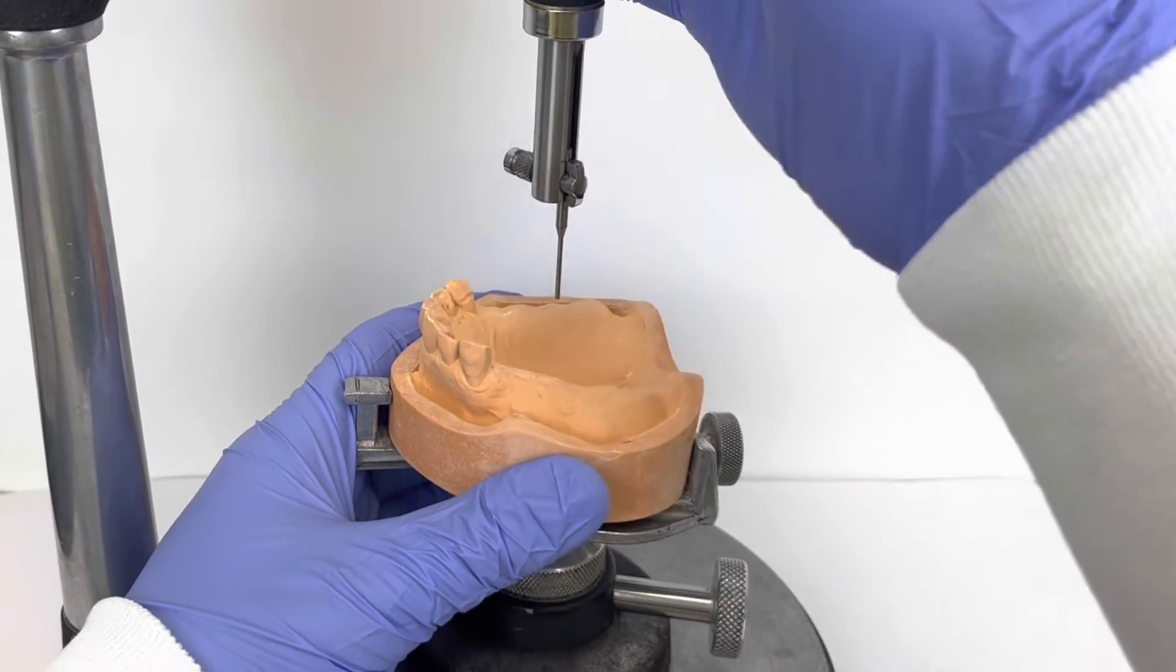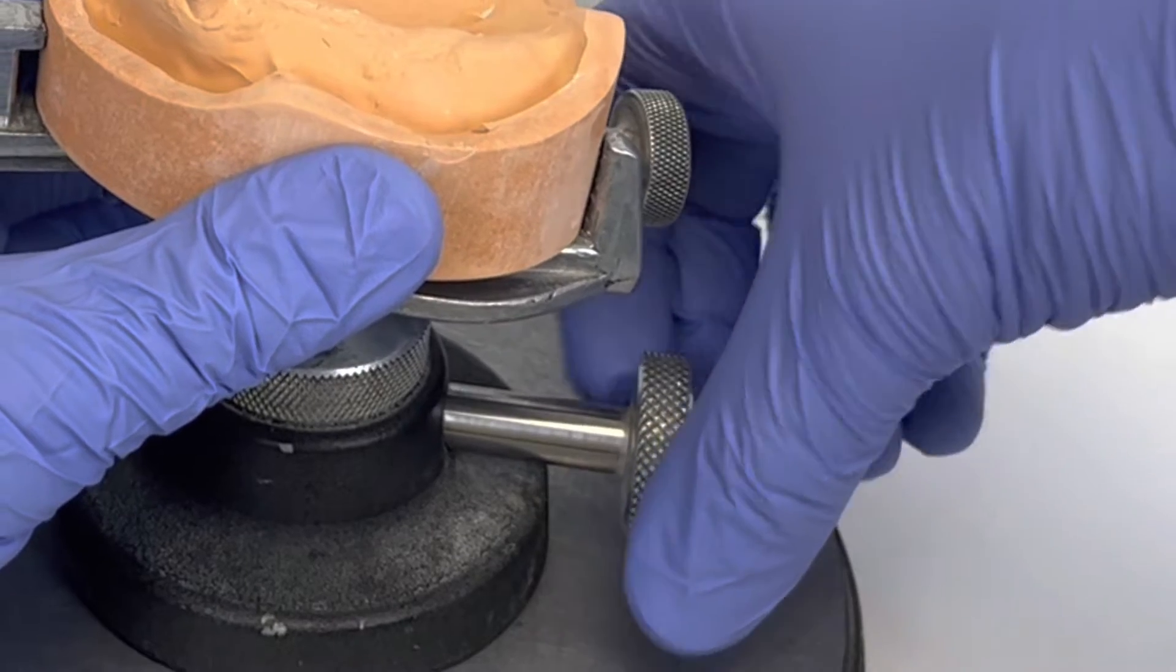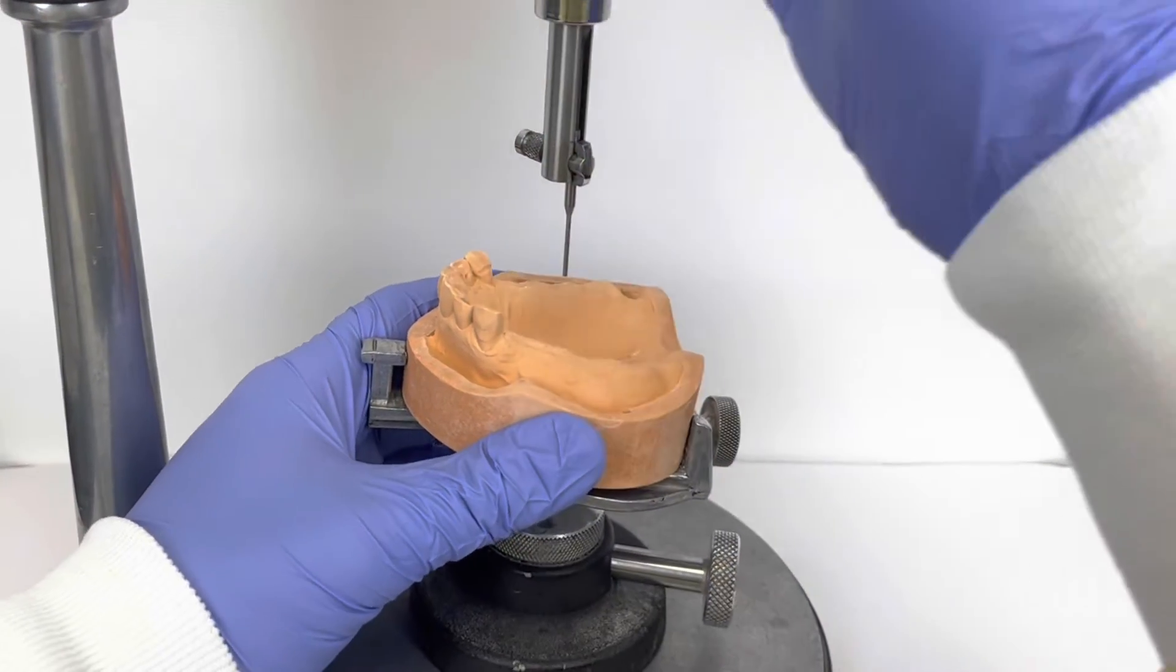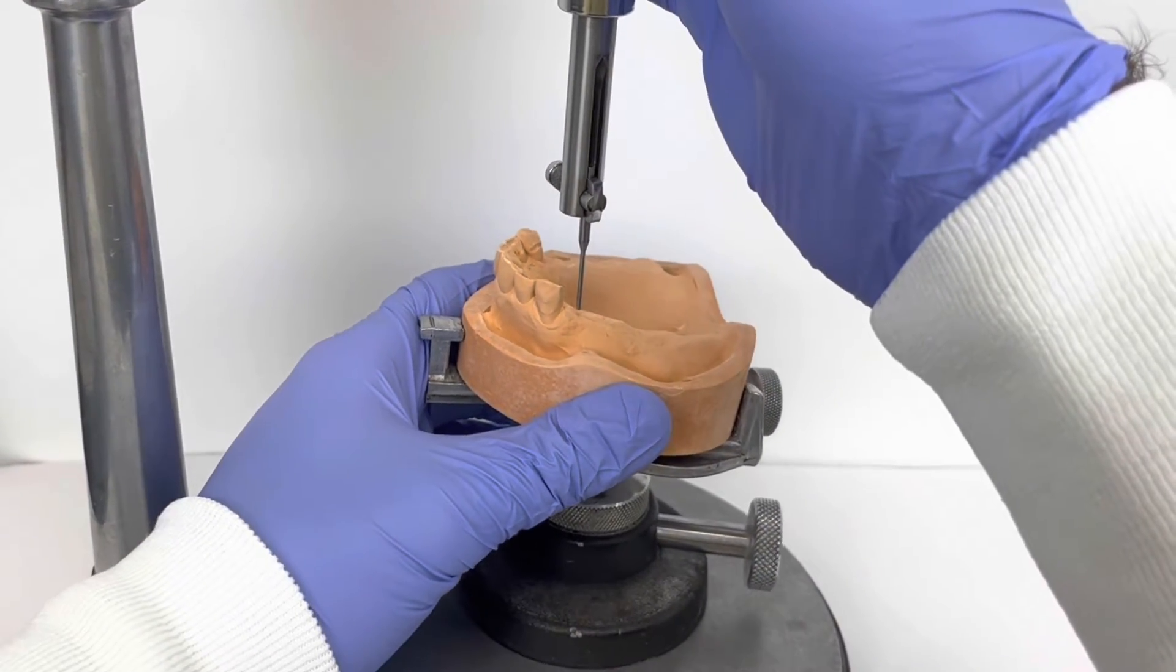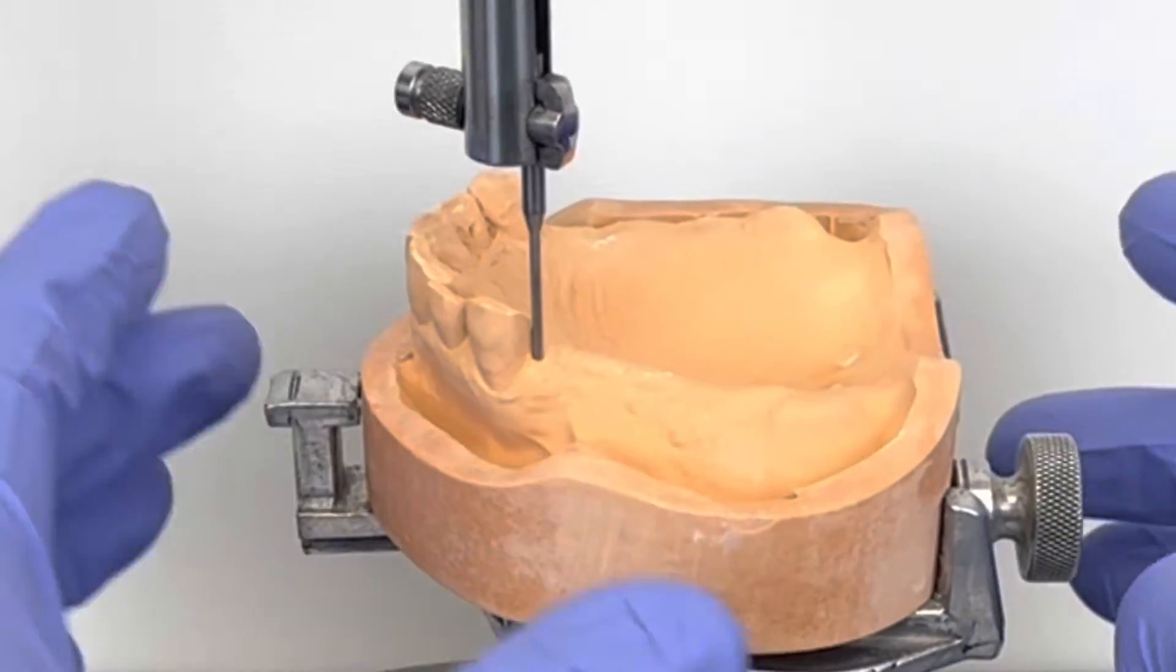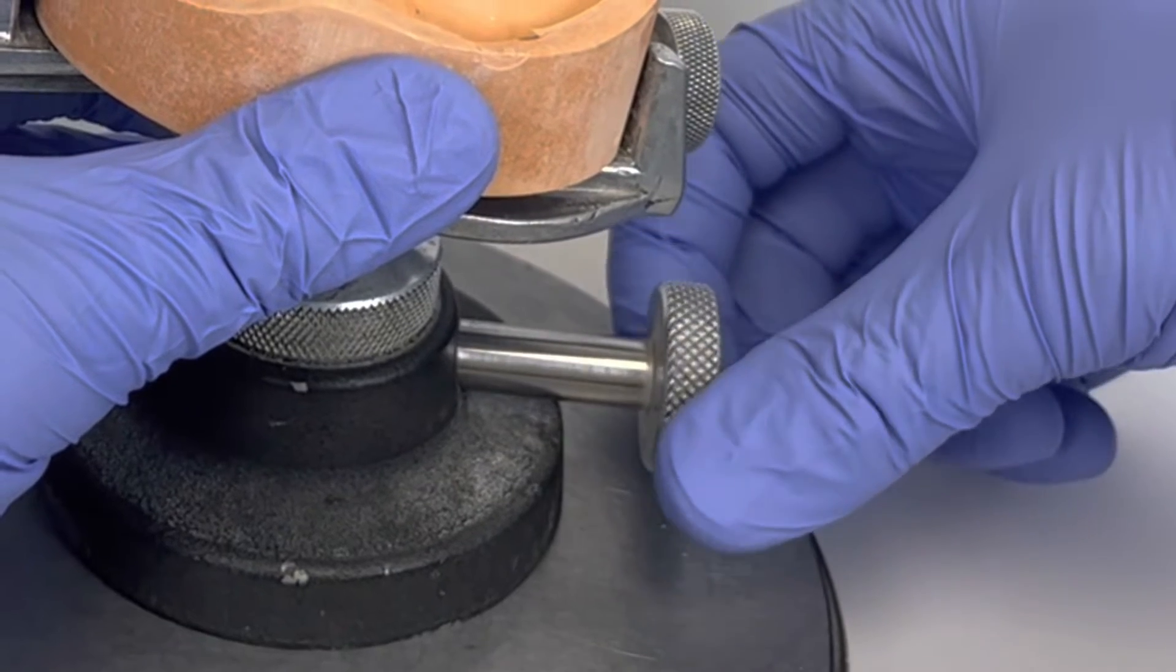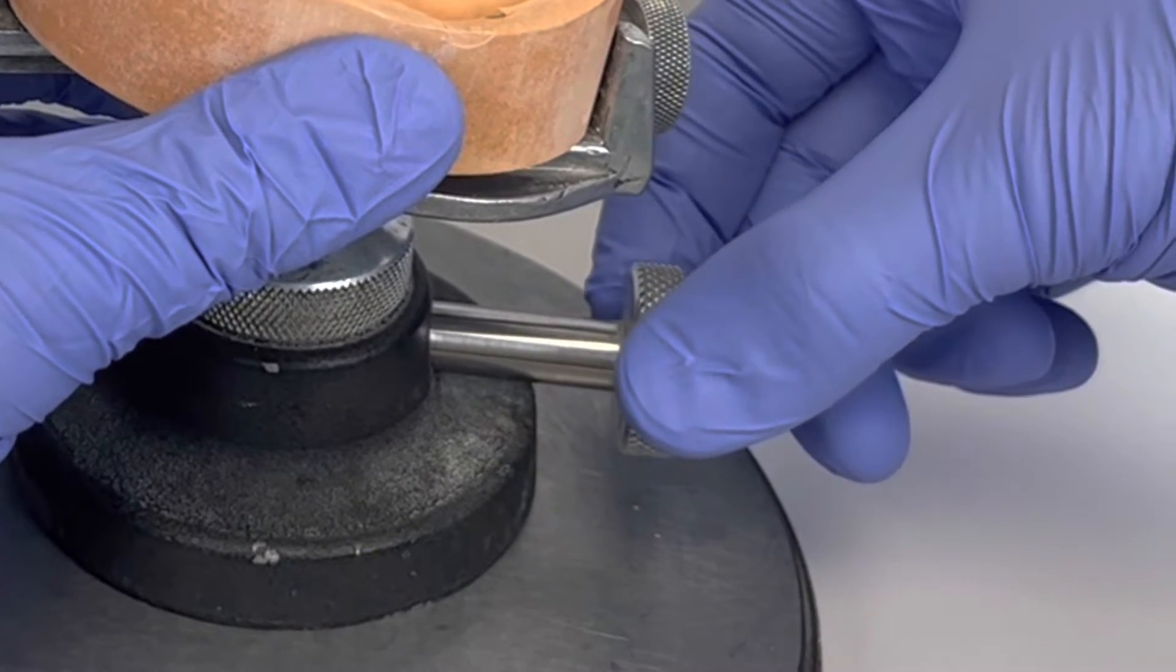With the analyzing rod placed in the surveyor, the hinge is loosened to allow for free movement of the table. The cast is now angled to allow the analyzing rod to fit against the side of the tooth as close as possible. Once an acceptable angle is reached, the hinge is tightened to stabilize the table in position.